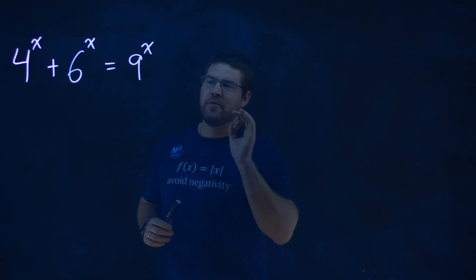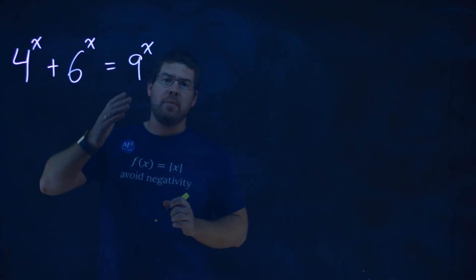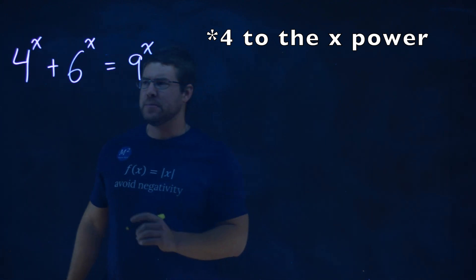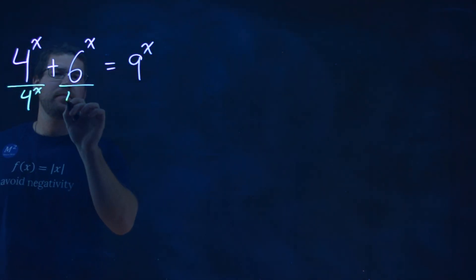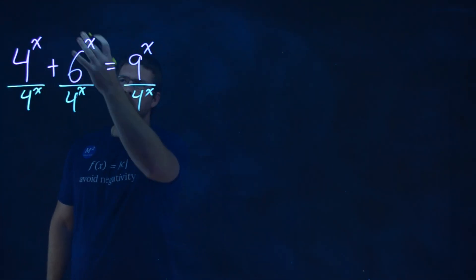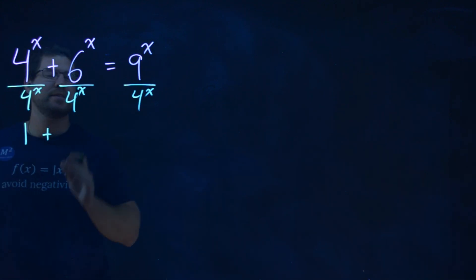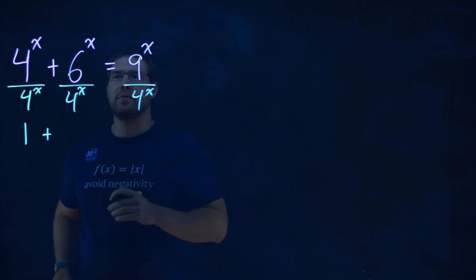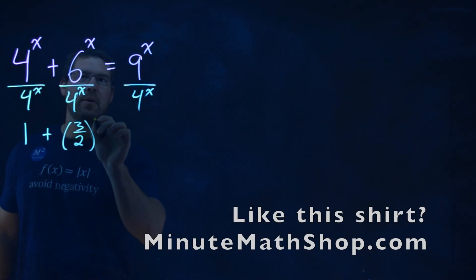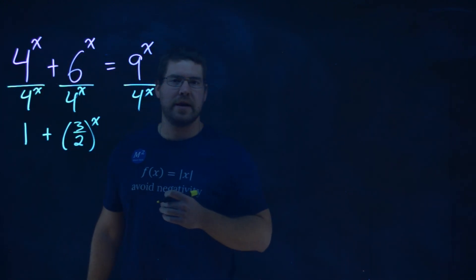This one actually is fairly easy to solve. We first want to divide both sides of the equation by 4^x. So we divide everything by 4^x. 4^x over 4^x is just 1. 6 over 4 is 3 halves, and we raise that to the x power — that's what 6^x over 4^x simplifies to be.